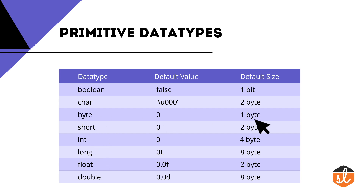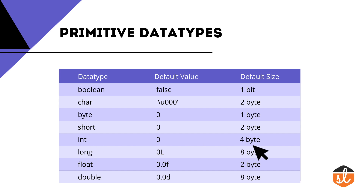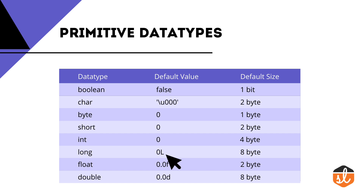For byte, the default value is 0 and default size is 1 byte. For short, default value is 0 and default size is 2 bytes. For int, default value is 0 and default size is 4 bytes. For long, default value is 0L and default size is 8 bytes — the capital L depicts that it is the long data type. For decimal values, you have two data types: float and double.